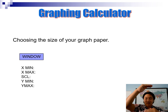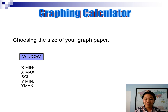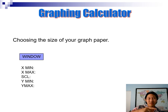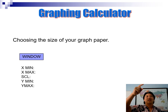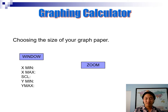The same applies for Y minimum and Y maximum — always use the negative sign, not the minus sign. The SCL setting just controls the scale increments and you don't need to worry about it. For most purposes, set X and Y from negative 10 to positive 10 — a standard 10 by 10 window will work.